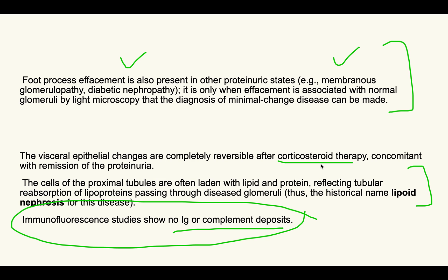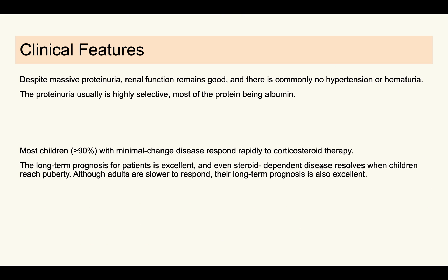The name 'lipoid nephrosis' is explained as follows: from the glomeruli, there is increased loss of lipids and proteins into the proximal tubules. The proximal tubular cells attempt to reabsorb the lipids and proteins, so these cells become laden with lipids and proteins. This is the reason for the name lipoid nephrosis — the tubular cells are filled with these substances due to their reabsorptive efforts.